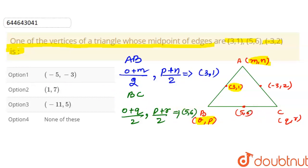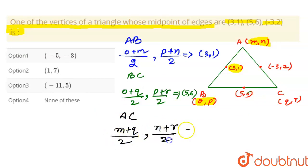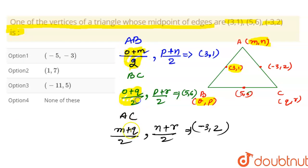The third line is AC. Using AC, we write (m + q) / 2 and (n + r) / 2, which is given as (-3, 2). So we have three x-coordinates: o, m, and q, and three equations with corresponding values 3, 5, and -3.